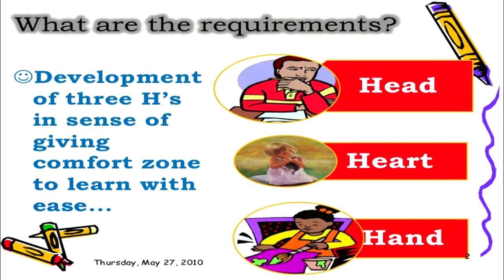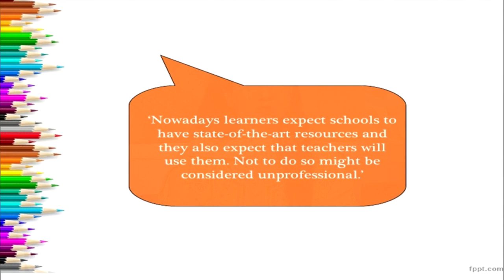What are the requirements for teaching learning material to be made and used? The development of three aids gives a comfort zone to learn with ease, and the three aids are head, heart and hand. The involvement of all three is needed for making TLM and for using TLM. Nowadays learners expect schools to have state-of-the-art resources and they also expect that teachers will use them. Not to do so might be considered unprofessional.